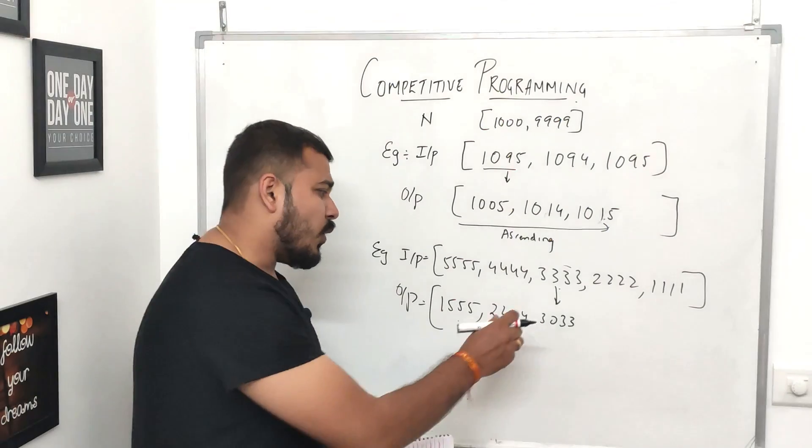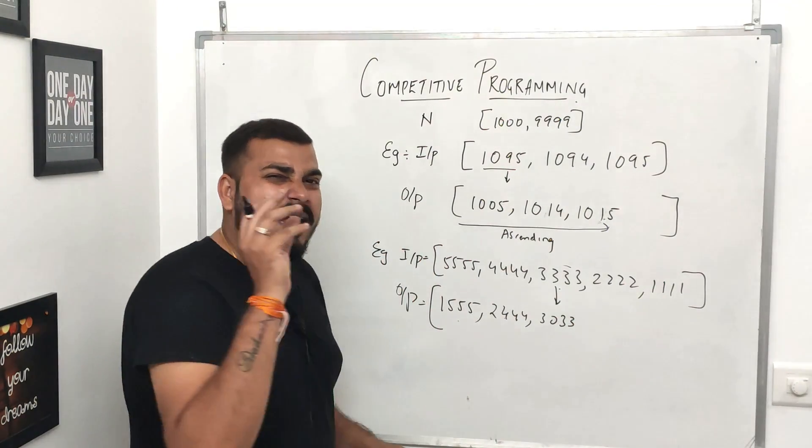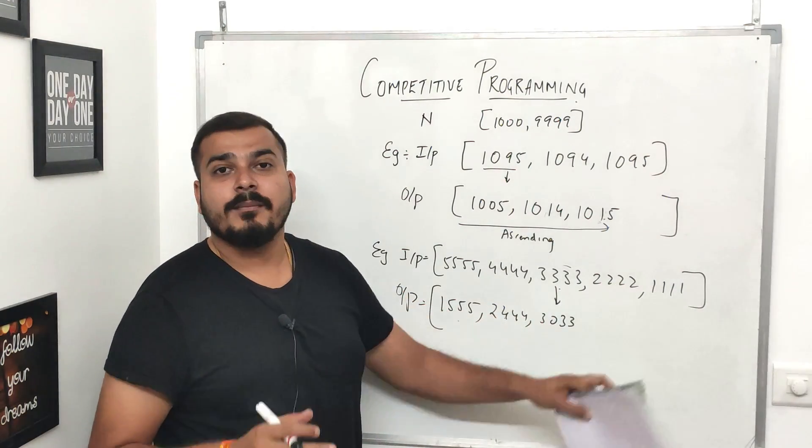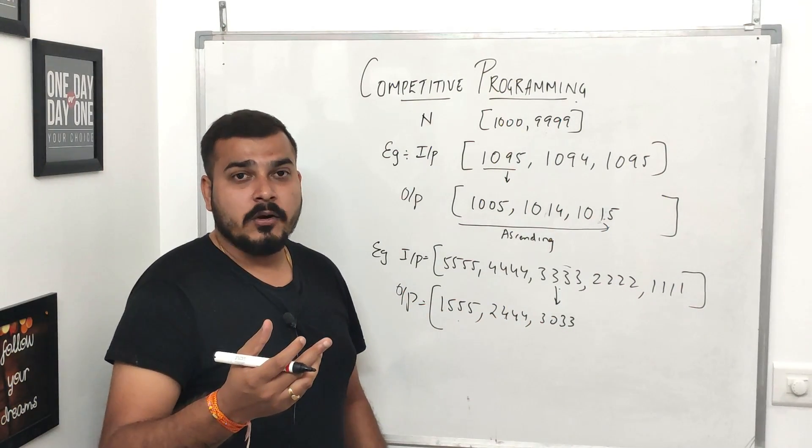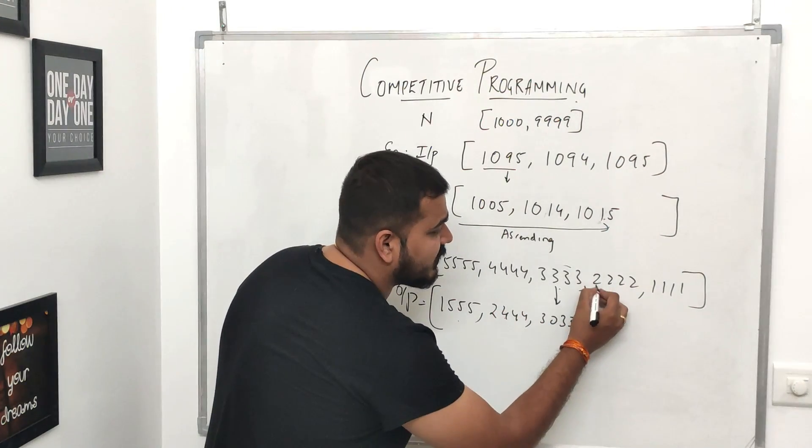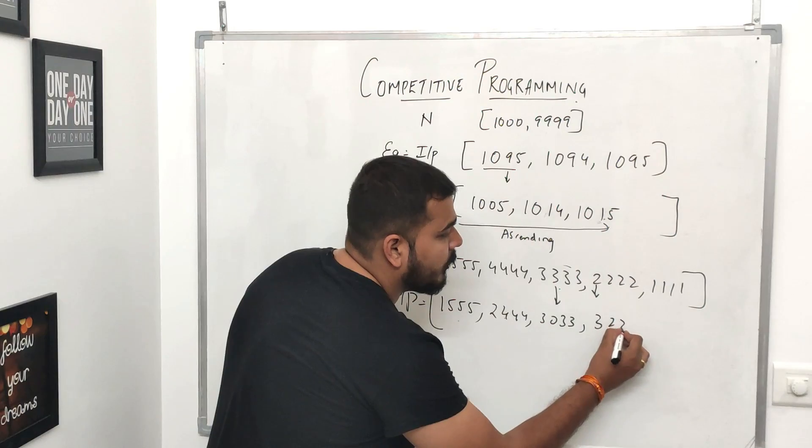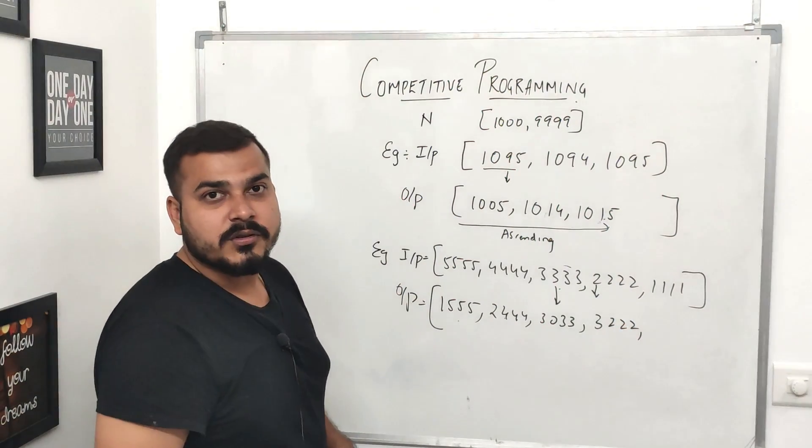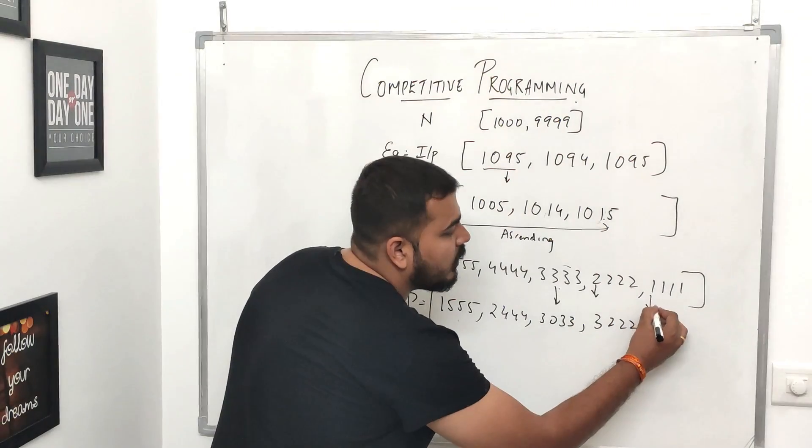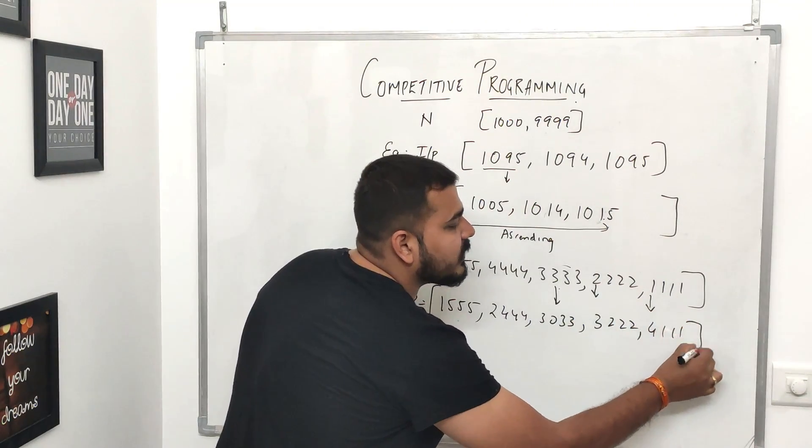So in order to convert this, what I'll do is that I'll make this as 3033. And remember, whatever next number I'm choosing, it should be at least some difference, not a huge difference, because it will be difficult for these particular numbers to actually change in that order. Then what about this one? For this one, I can just convert this two to three, and this will become 3222. Then similarly, I can convert this one to four, and then this will become like this.